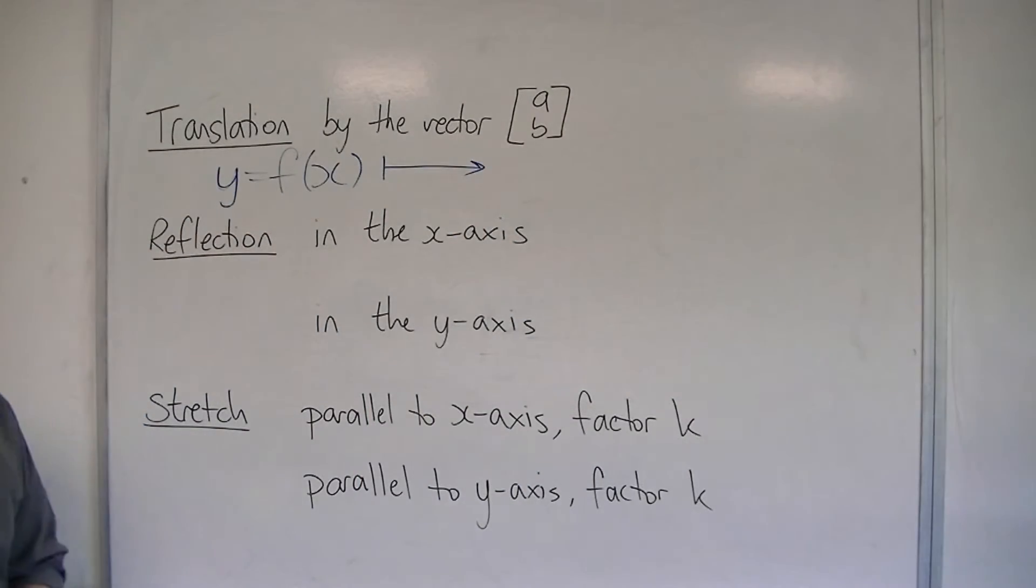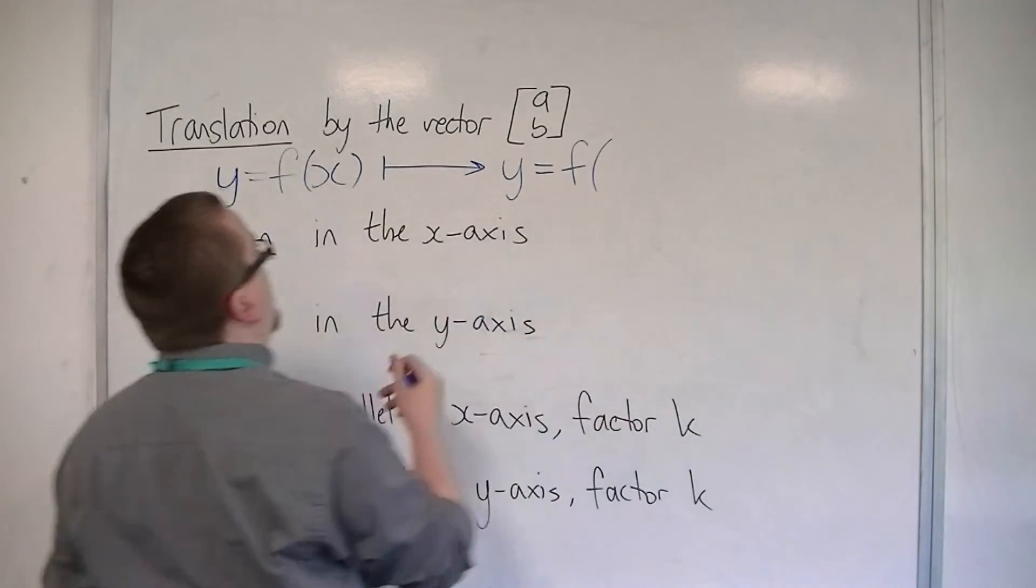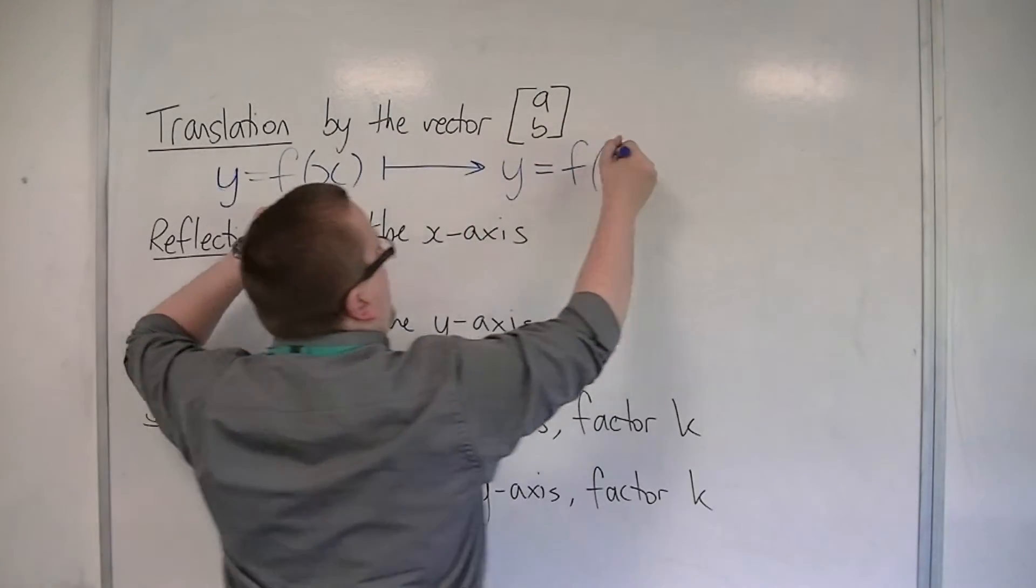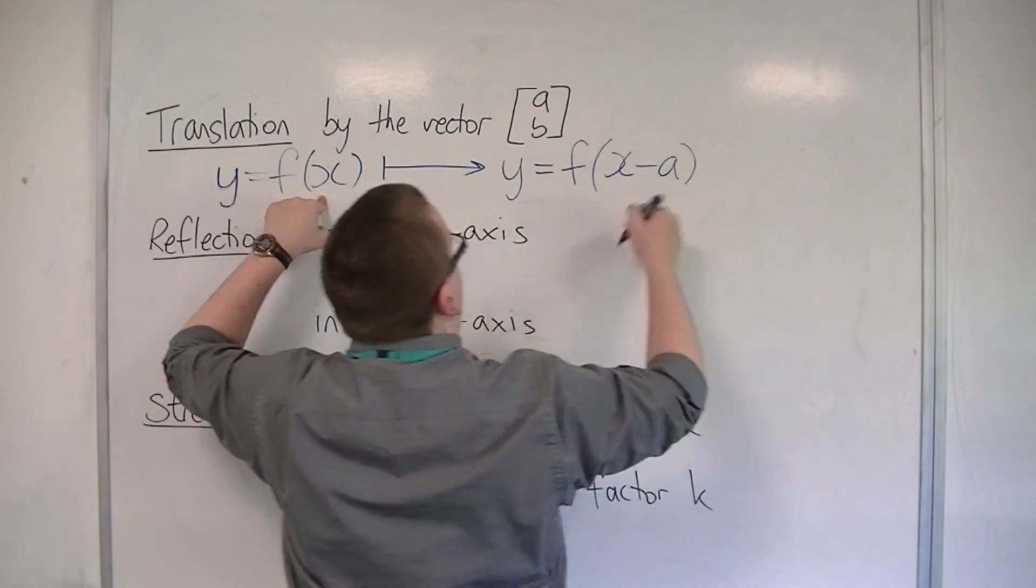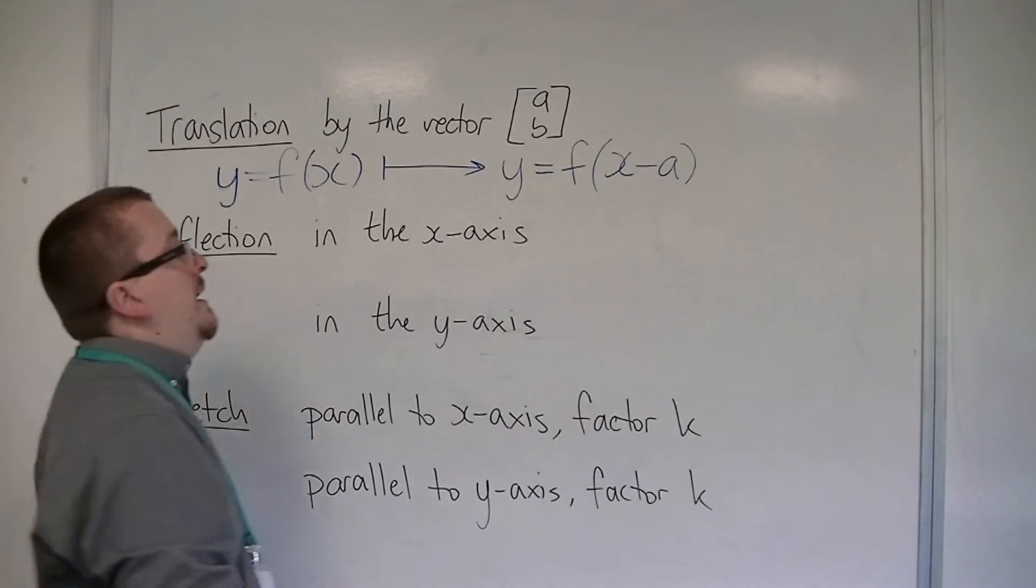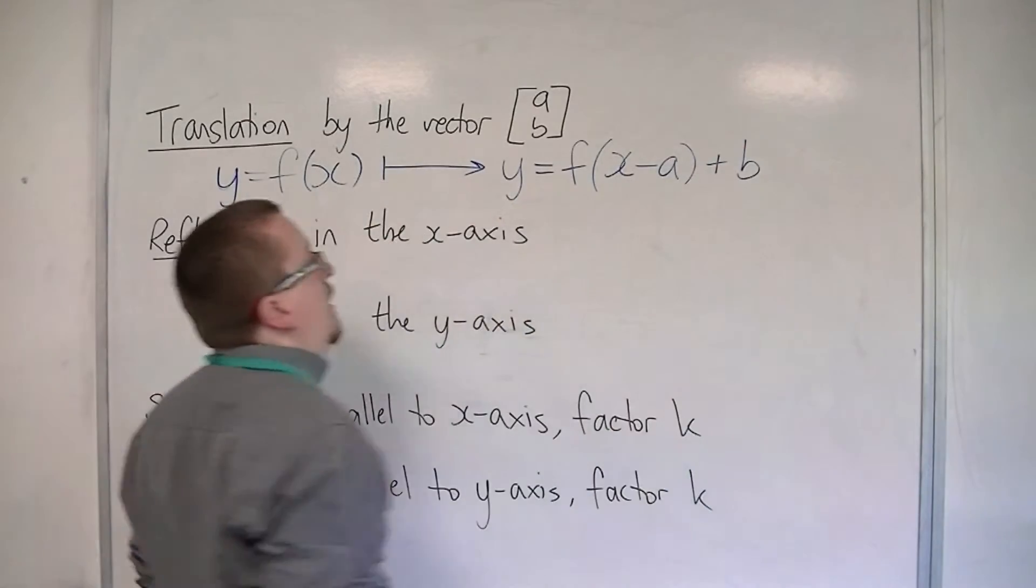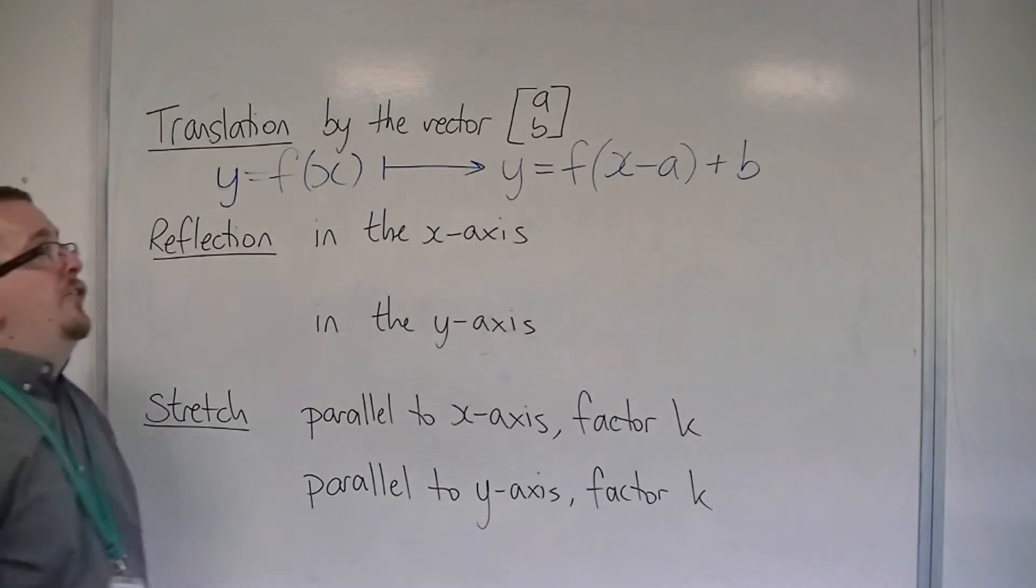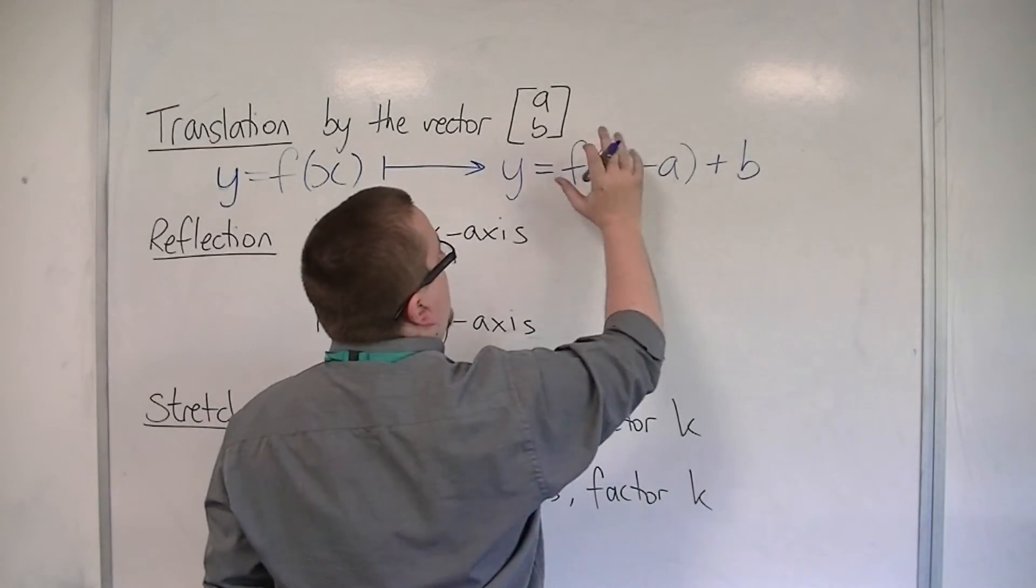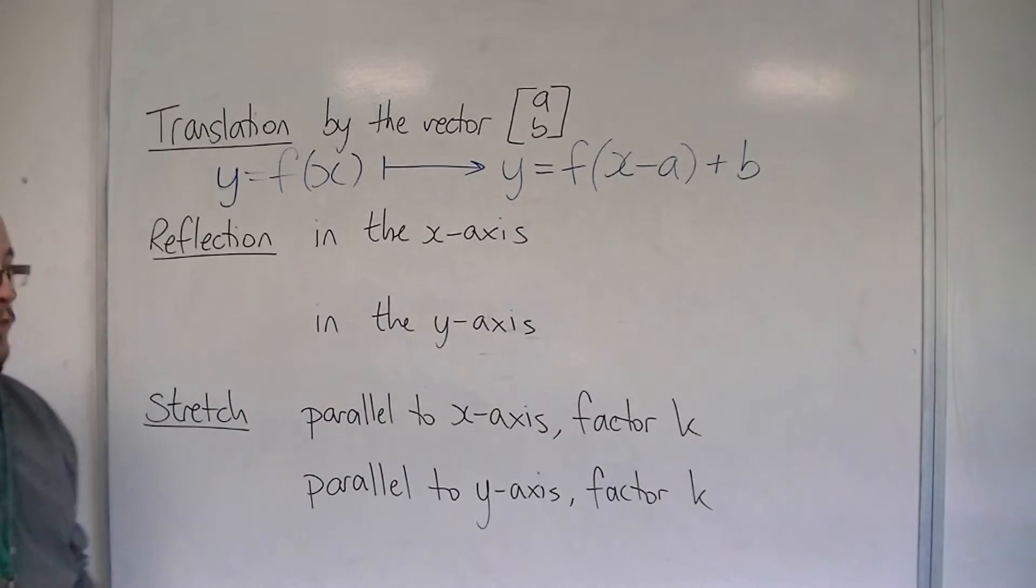then what happens is that we have y equals f of... the a means that the x is replaced with x minus a. And the b means that y is replaced with y minus b. And if I then add b to both sides, I get it into that format. So you can see that the a is changing the sign and is inside the bracket, the b stays the same and is outside the bracket.